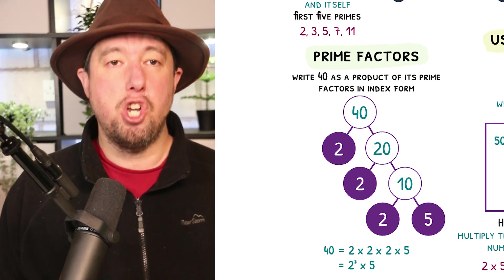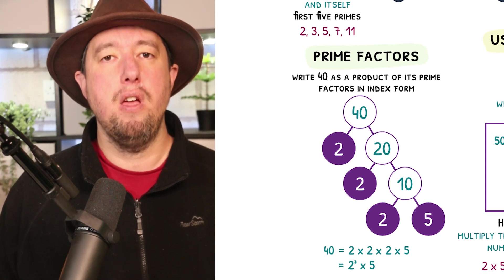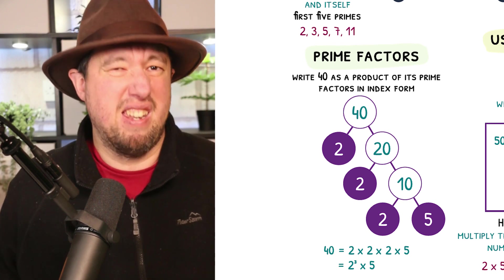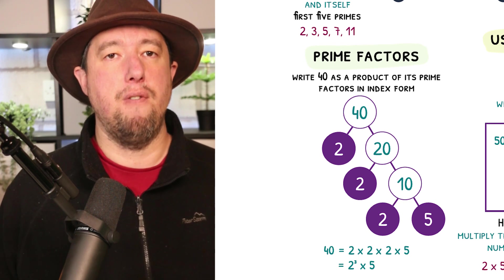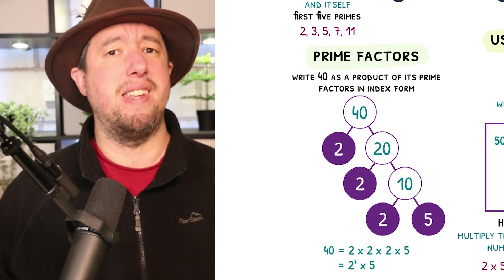The prime numbers we found were 2, 2, 2 and 5, written as a product. Product means multiply. The answer would be 2 times 2 times 2 times 5. Often you'll be asked to write this in index form. This would give us 2 cubed times 5.